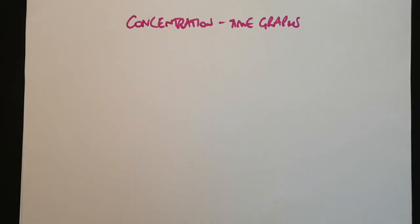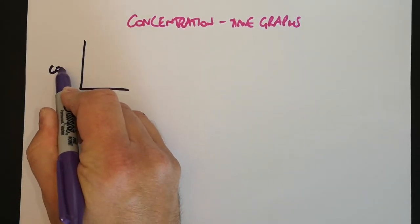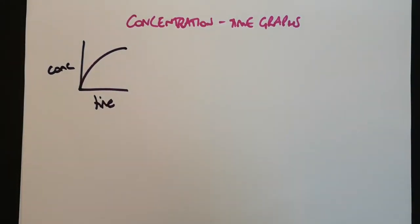Concentration-time graphs you'll have seen before. In most cases what you'll have seen before is a concentration-time graph relating to the production of a product which looks like that.